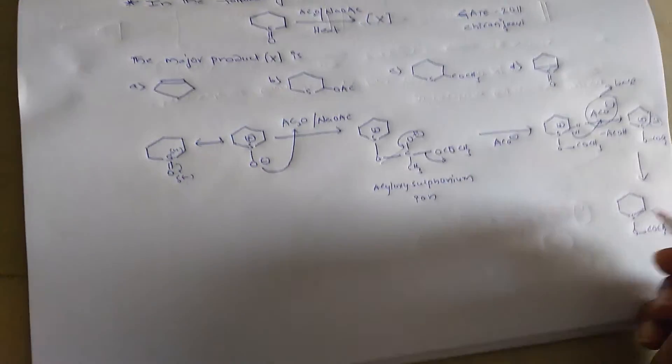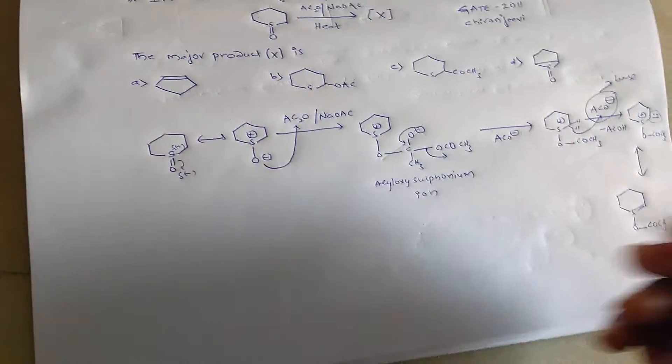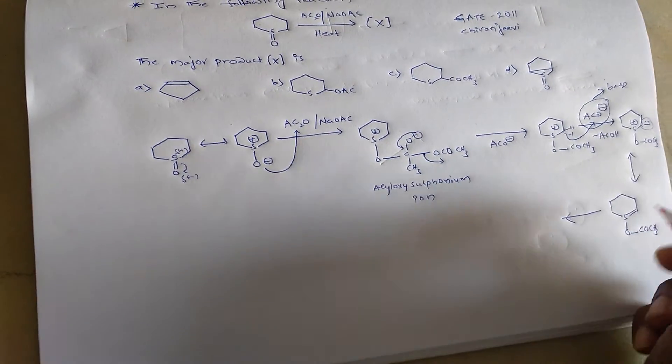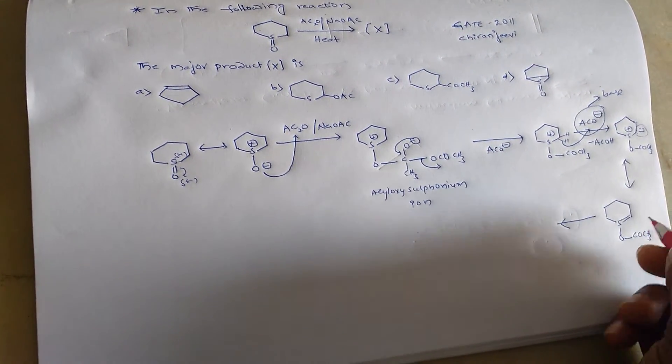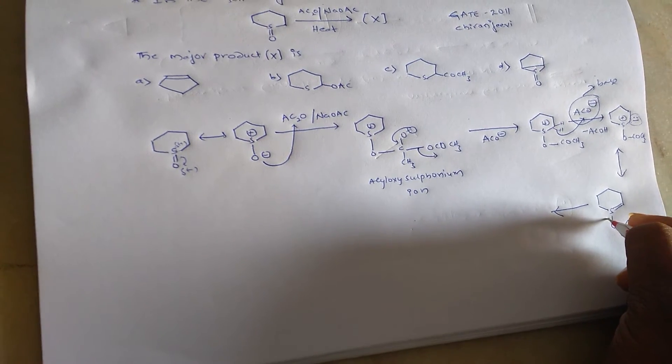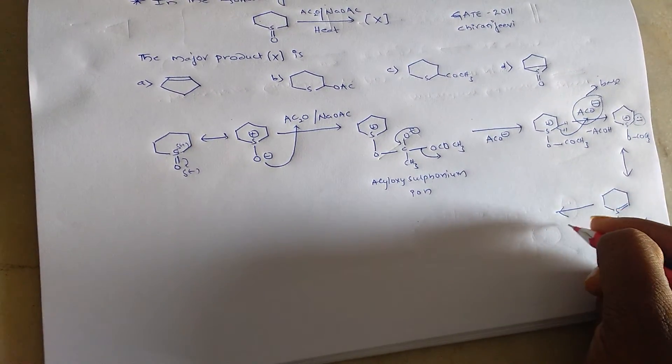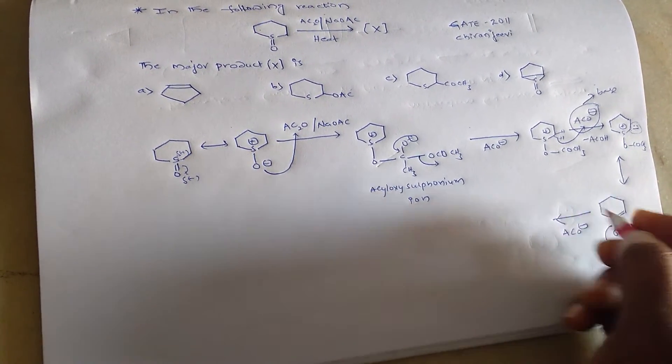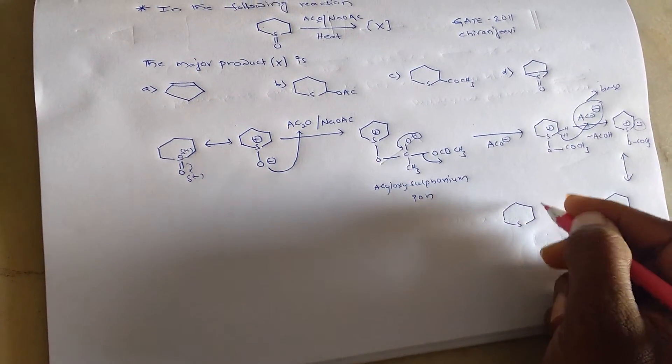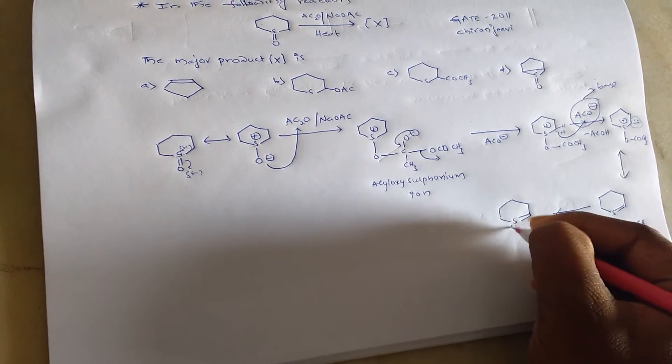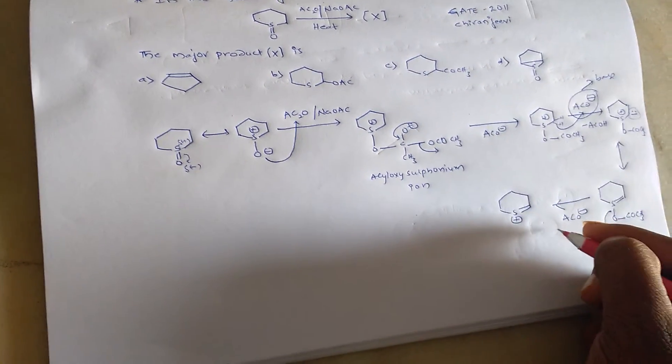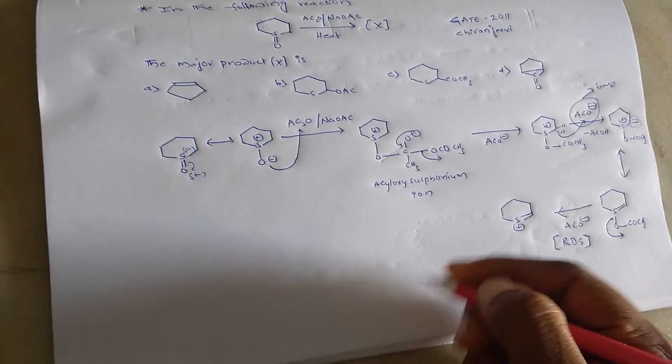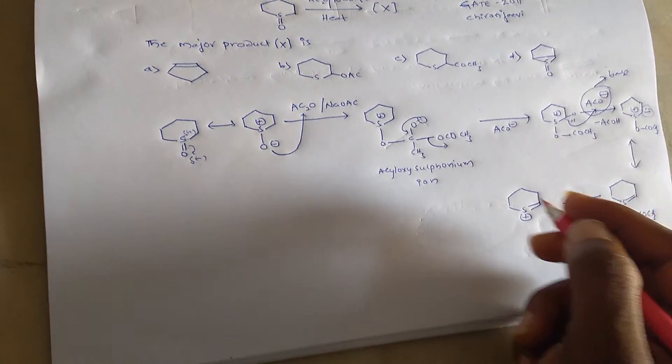Then, further removal of ACO- forms positive charge on sulfur and this is the rate determining step.